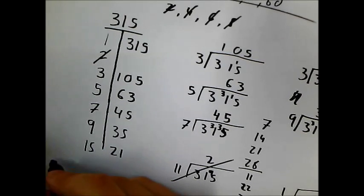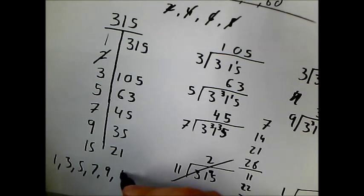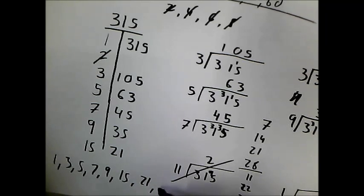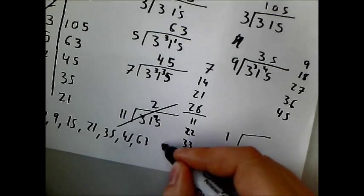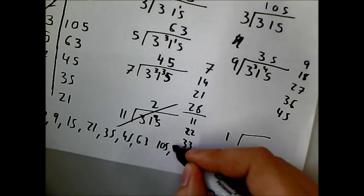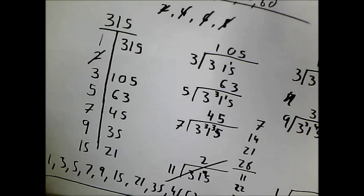So to finish off, my factors are 1, 3, 5, 7, 9, 15, 21, 35, 45, 63, 105, and 315. And that is all of them.